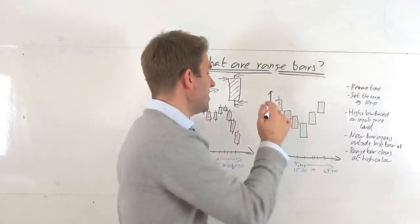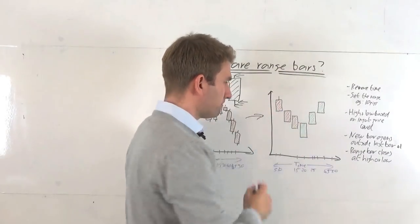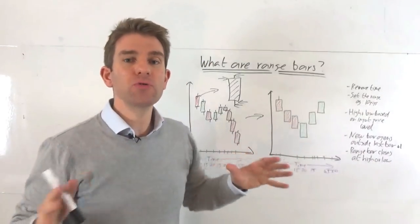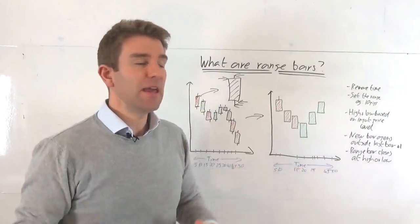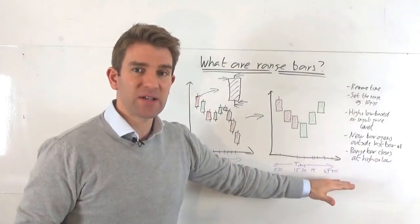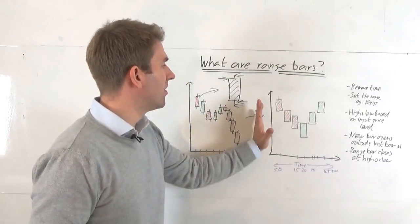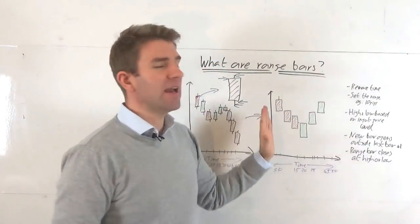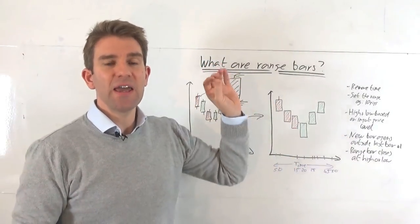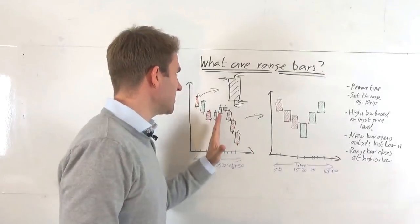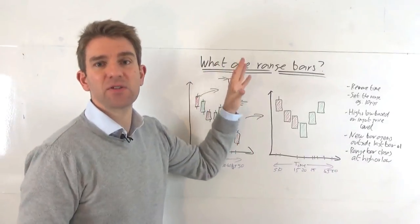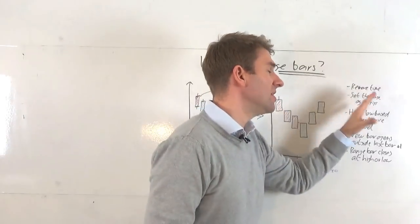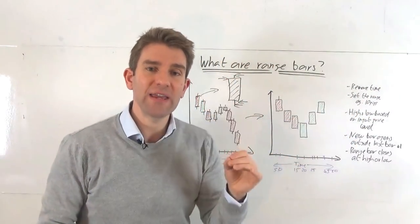But when we compare that to a range chart, a range chart is different. It basically removes all time from the equation. Now you still have time on your x-axis, you still have price on your y-axis, but each candlestick or each bar is formed using a range as opposed to a time. So in this instance, each candle is 15 minutes or an hour or whatever we've got it set to. In this instance, each candle or each bar is set to a range.